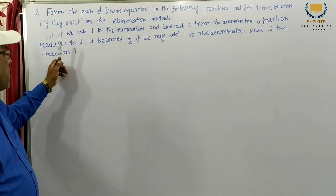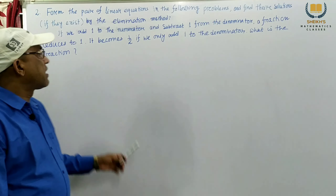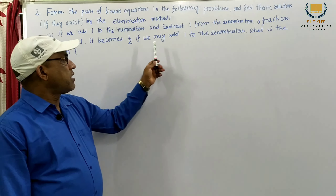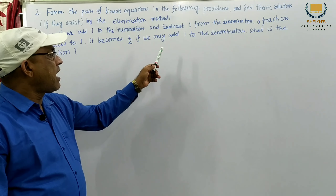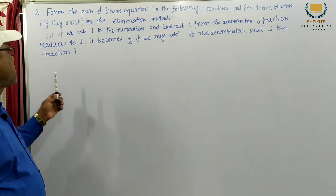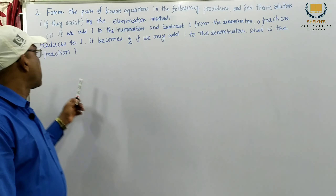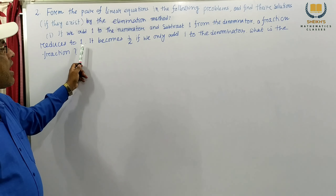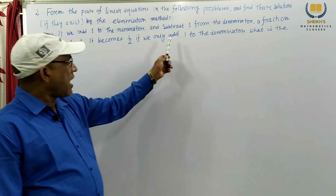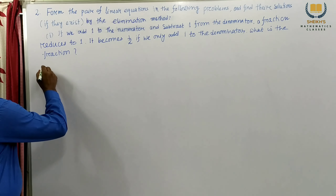Problem number 1 given: if we add 1 to the numerator and subtract 1 from the denominator, a fraction reduces to 1. It becomes 1 by 2 if we only add 1 to the denominator. What is the fraction? This is a very easy solution.